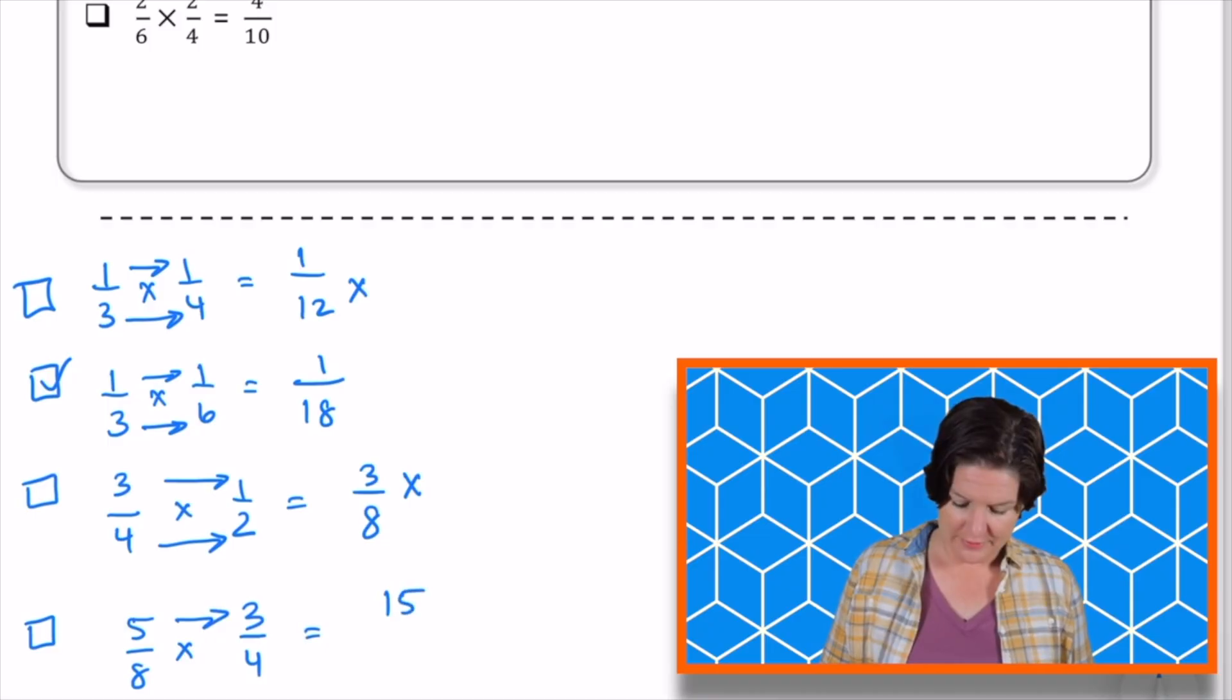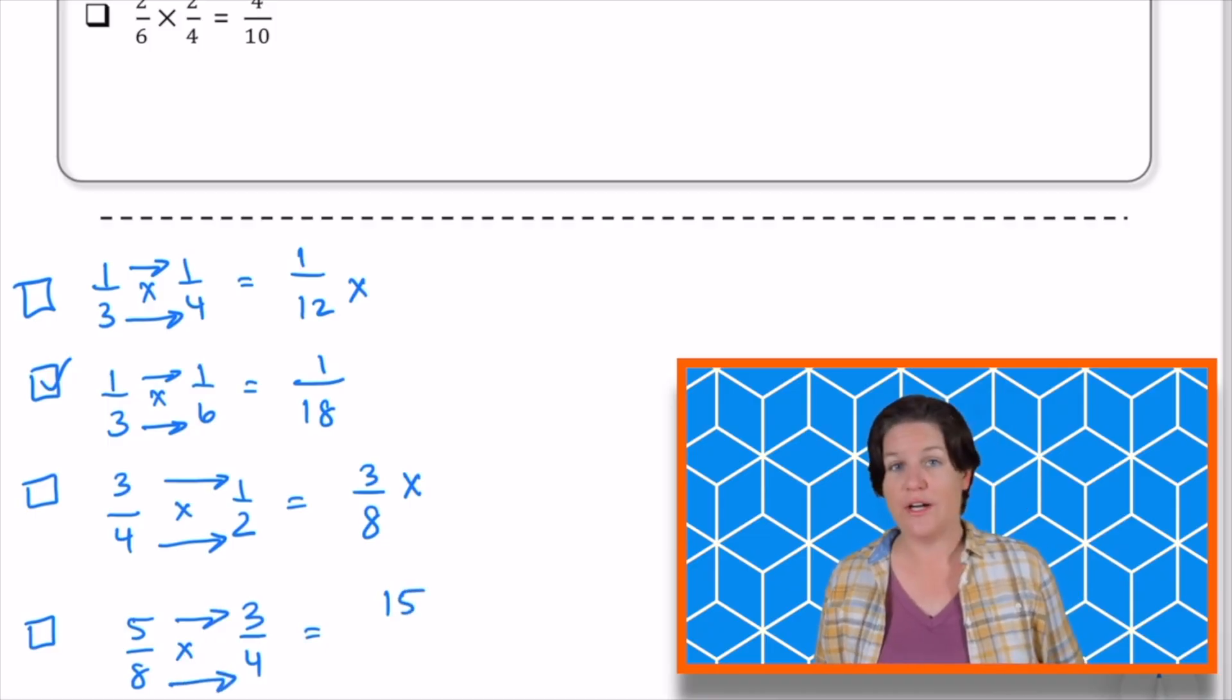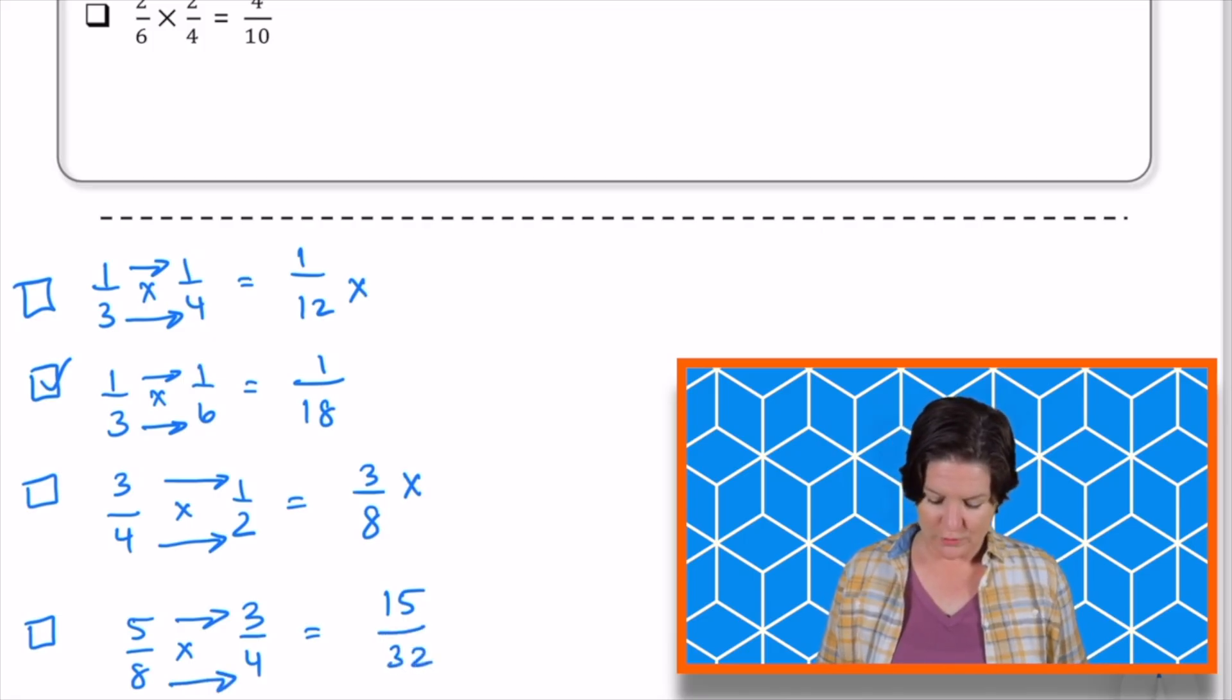15. And 8 times 4, is that 32? It is, which means that this one is correct, so we can go ahead and mark that answer choice.